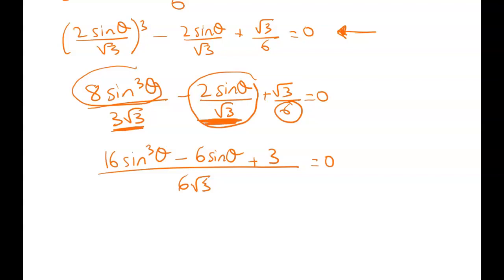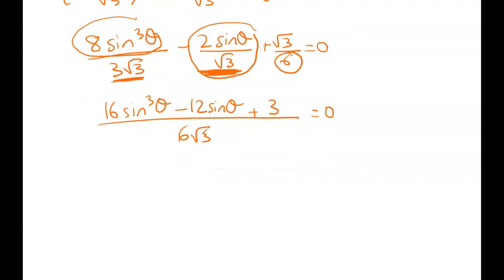I should have timesed by six. Six twos are not six. Six twos are twelve. So that's just I guess a lesson when you're doing a problem like this. Just check your work on each line as you move through to the next one because luckily I picked up that mistake in here. I'm going to times both sides through by six root three. That's going to give me sixteen sine cubed theta minus twelve sine theta plus three equals zero.